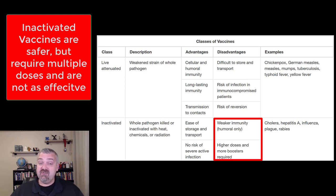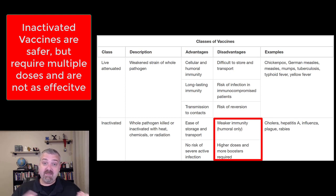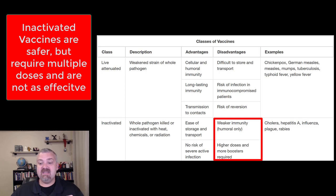Quick review of the two most important types currently. Live attenuated or weakened vaccines are more powerful, only need one shot, and provide better immunity. The downside is there's a risk of infection if you're immunocompromised or if it back-mutates to a more dangerous strain. The inactivated or killed vaccines require a series of injections and don't provide as strong immunity, but they are much safer and people who are immunocompromised can take them.